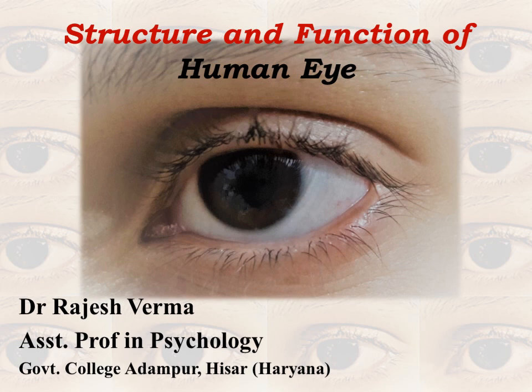The human eye is the most beautiful and most prominent organ. It has two beauty components: it improves the beauty of the face, and it is responsible for seeing and enjoying the beauty of nature — different colors, different shapes, and different types of objects. It has psychological connotations too. So in this video, let us discuss the structure and function.